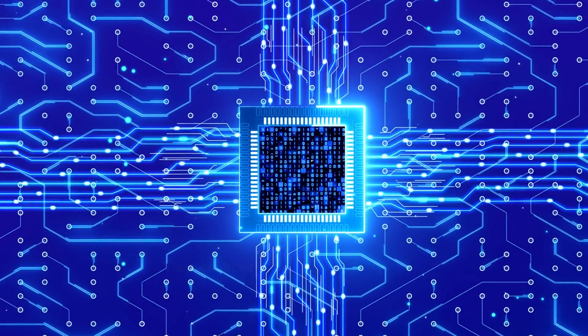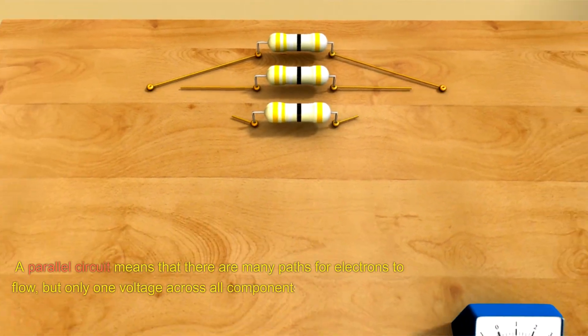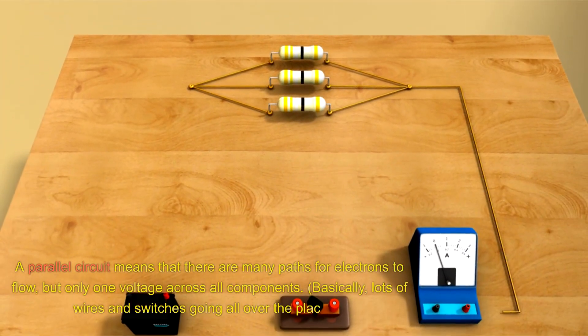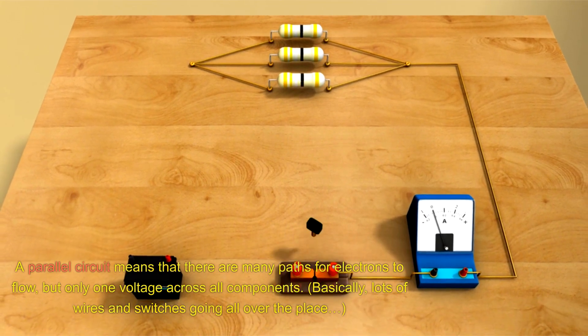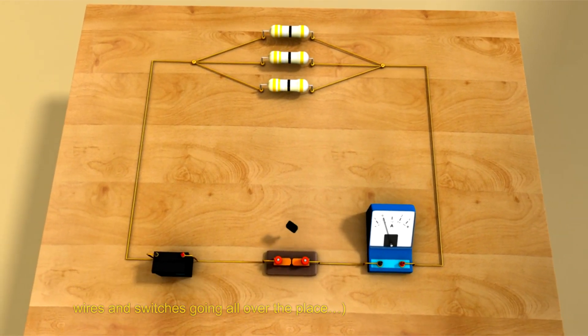Parallel circuit. A parallel circuit means that there are many paths for electrons to flow, but only one voltage across all components. Basically, lots of wires and switches going all over the place.